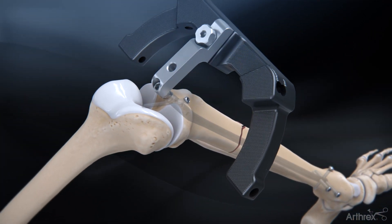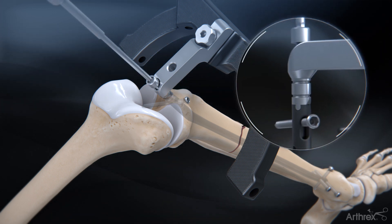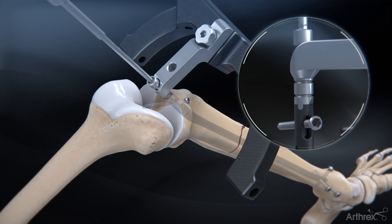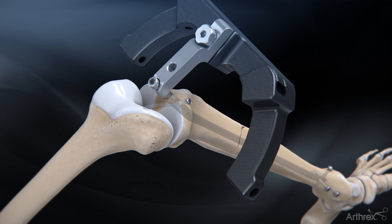For intraoperative fracture compression, insert the reduction bolt through the locking bolt at the top of the nail. Using the ball hex driver, rotate the reduction bolt clockwise until the desired compression is achieved or significant resistance is felt on the screw.